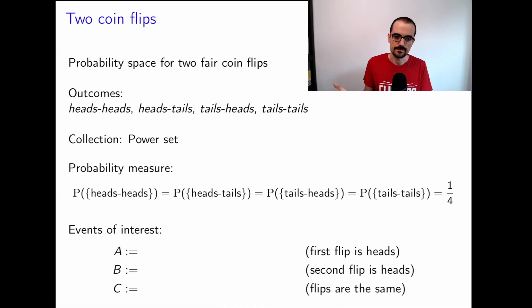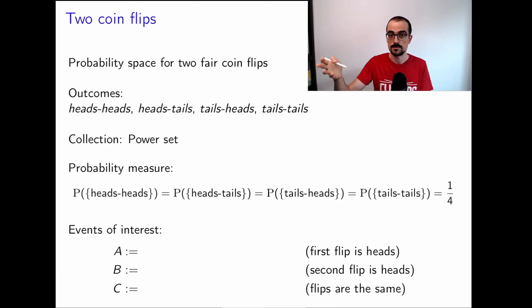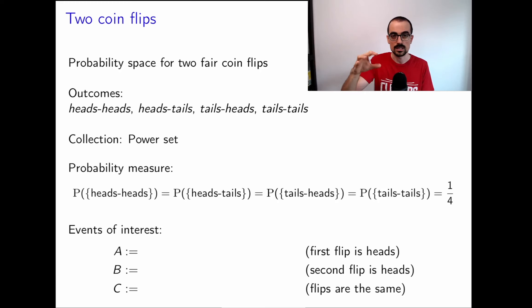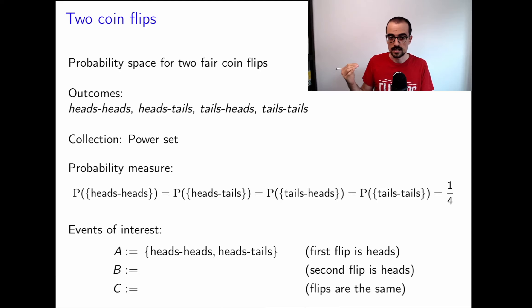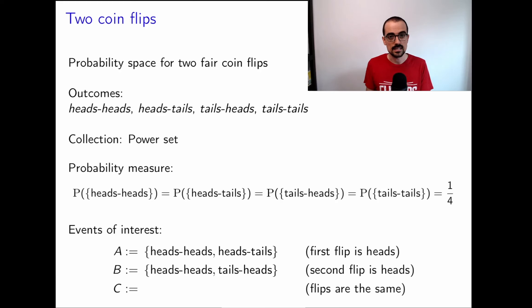Now we can reason about whether certain events are independent or dependent. Let's define three events: A = first flip is heads, B = second flip is heads, and C = the two flips are the same. Event A contains {HH, HT}, event B contains {HH, TH}, and event C contains {HH, TT}.